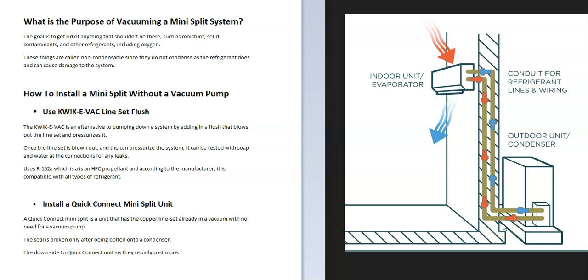All of this needs to be removed so the system lasts a long time. When you put a vacuum on it, that pulls it all out. The most ideal way to install a mini split is to use a vacuum pump, which is the recommended method for most mini split manufacturers.